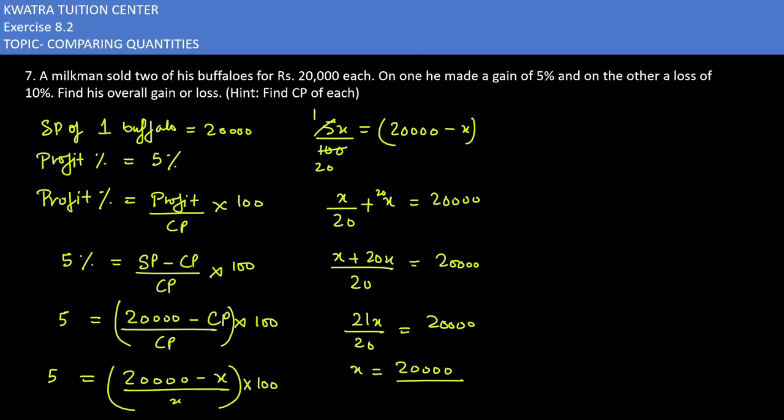Take 20 to the other side and 21 to the other side. 20,000 times 20 over 21. So the value you get is 400,000 divided by 21. This is our CP of the first buffalo.